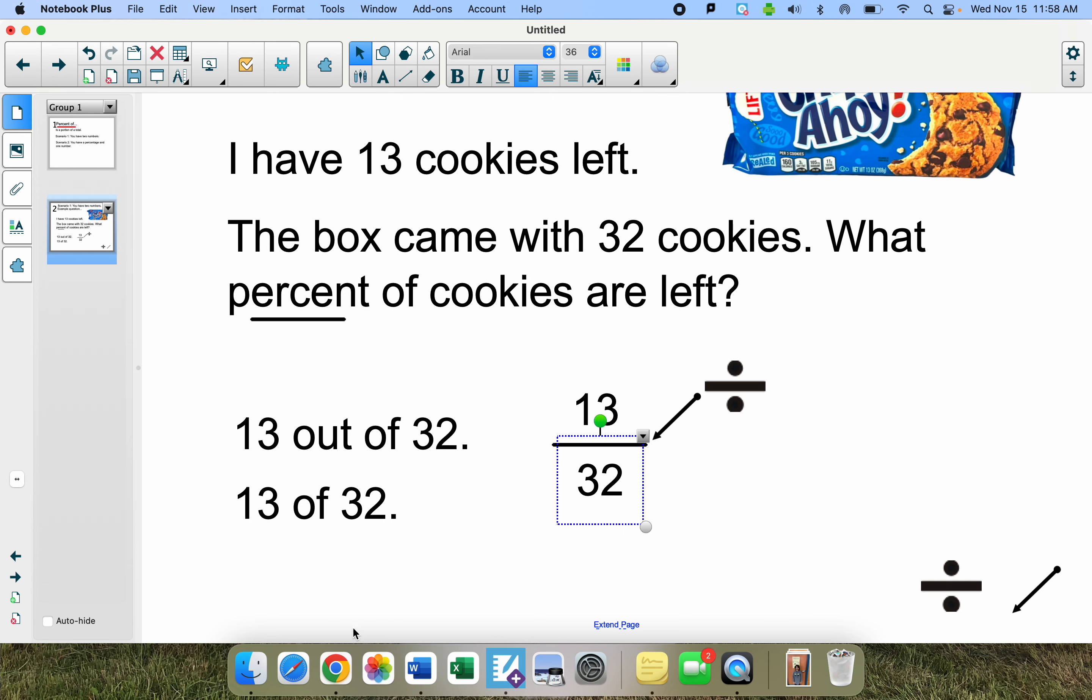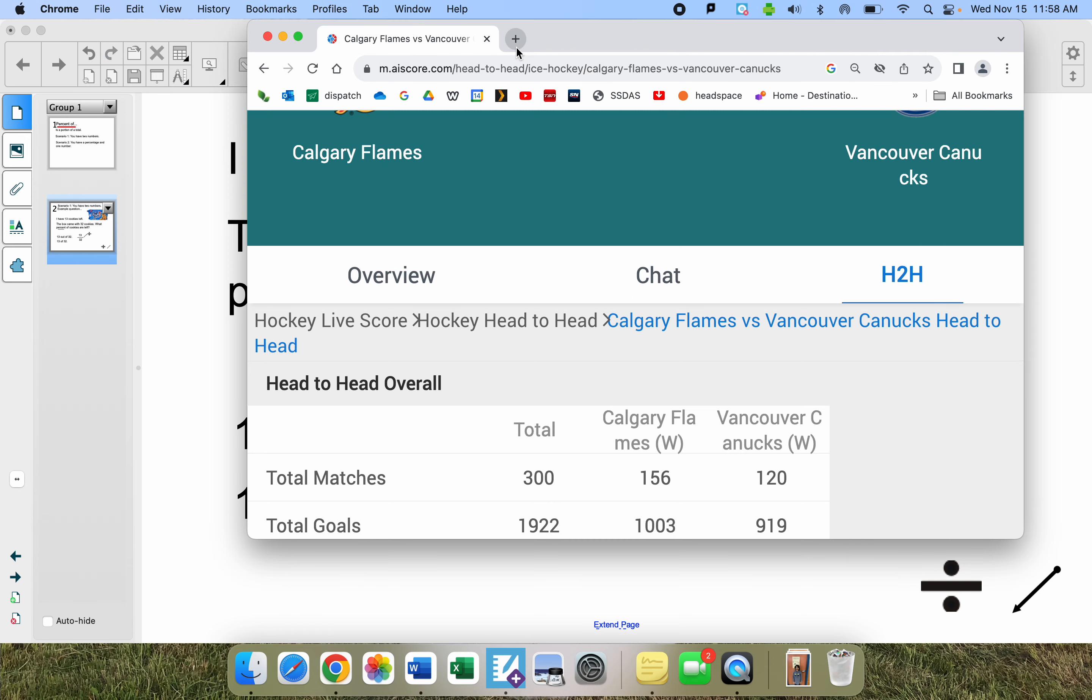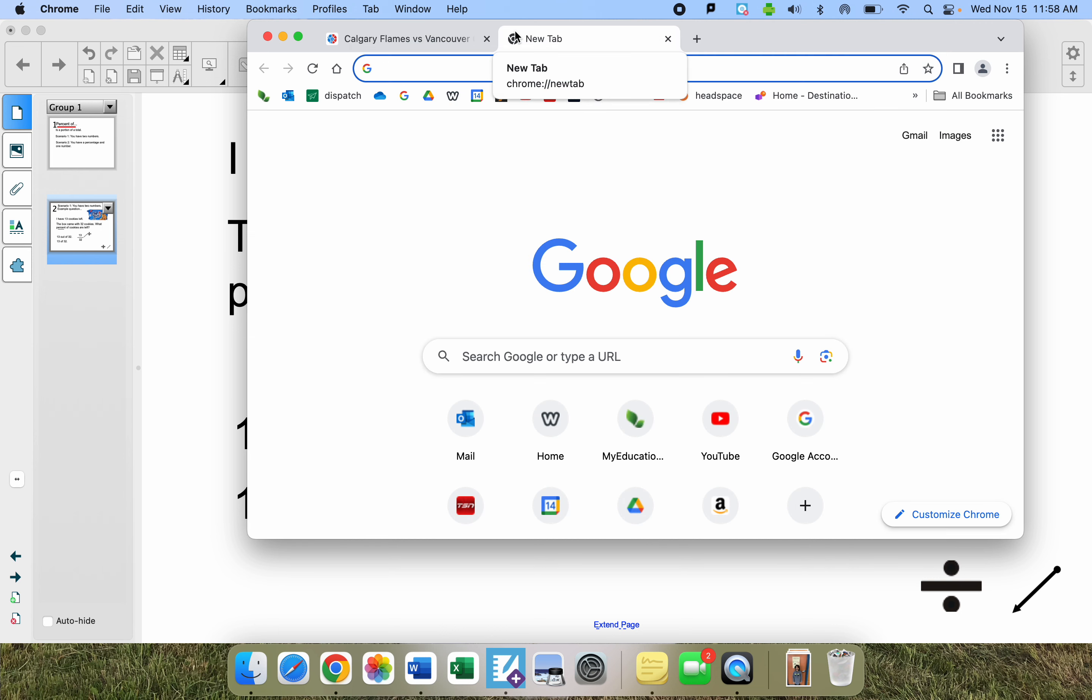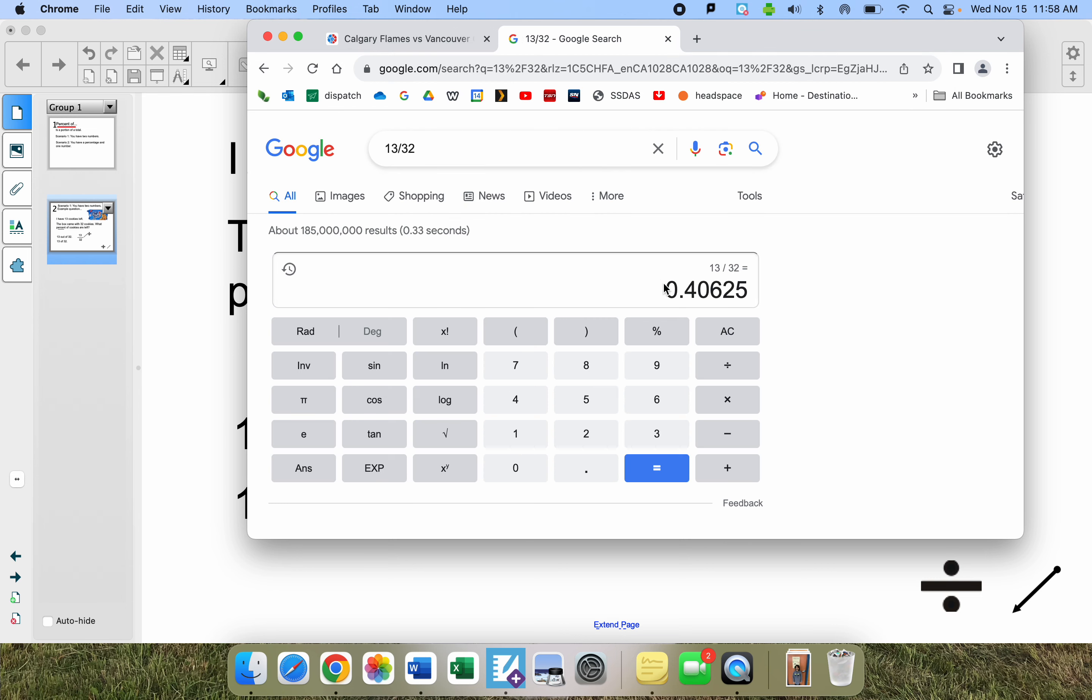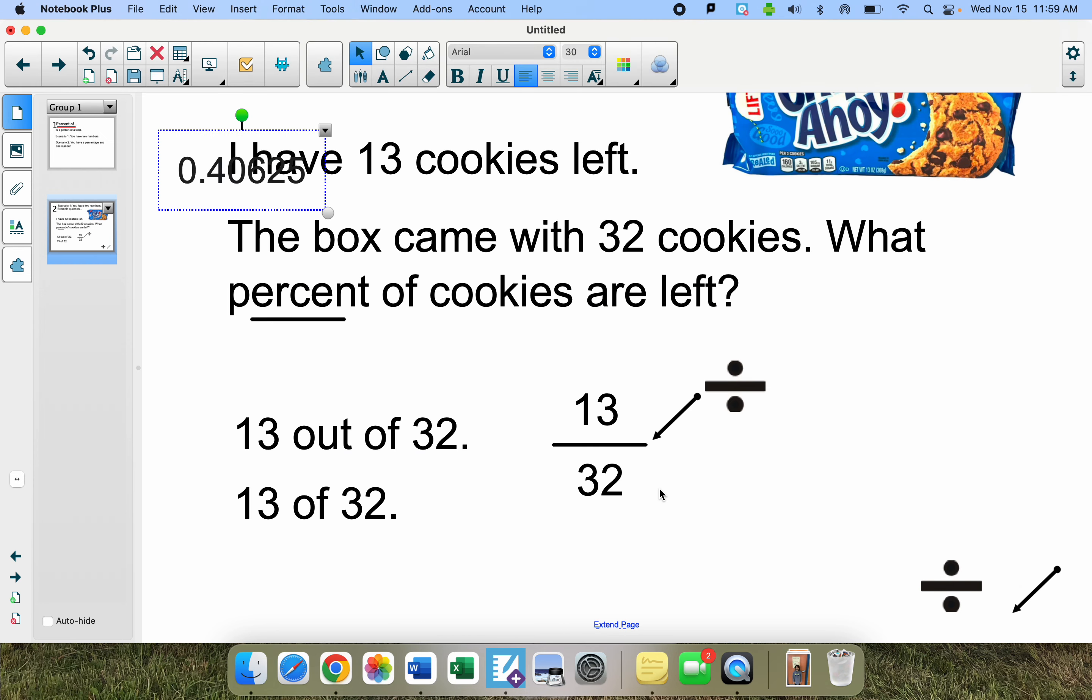So let me bring up a calculator here. So 13 out of 32. And when I do that, Google tells me 0.40625. So let me just grab that if I can. And I'm going to paste that in there.